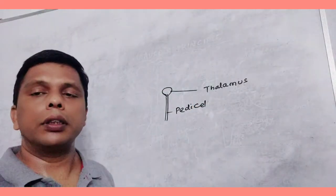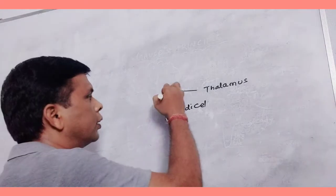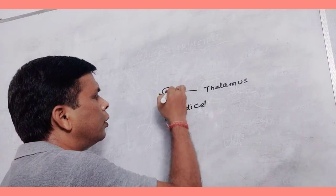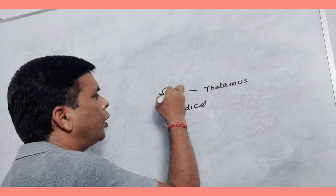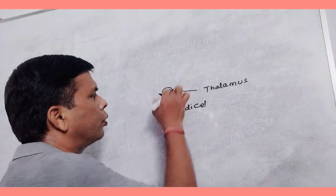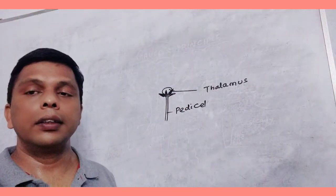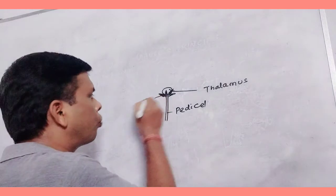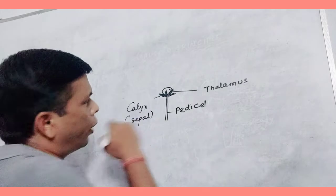Below the thalamus, there is calyx. It is a green part and during bud condition, it protects the bud. The individual unit of calyx is called sepal.